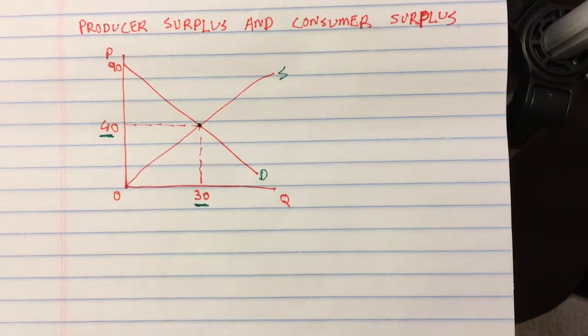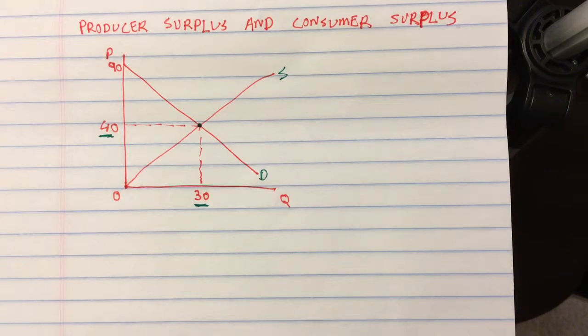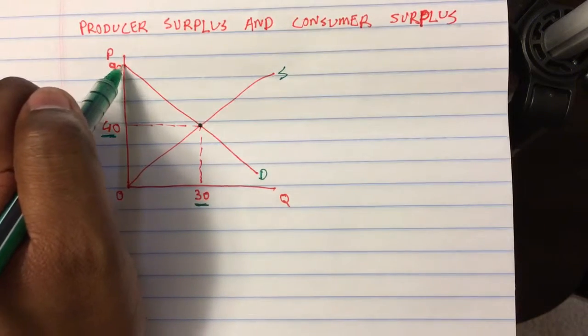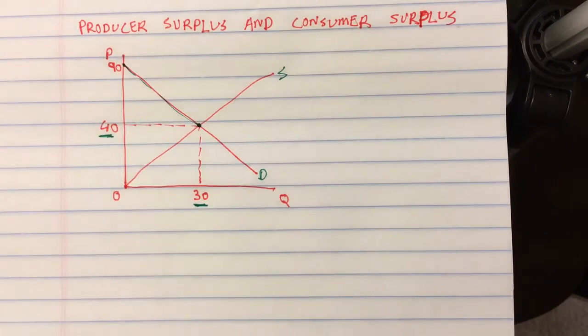Now if I'm given this scenario and I'm asked to calculate producer surplus and consumer surplus, then first, let's look at consumer surplus. Now let's think about the demand curve, which is the top part, which represents the consumers.